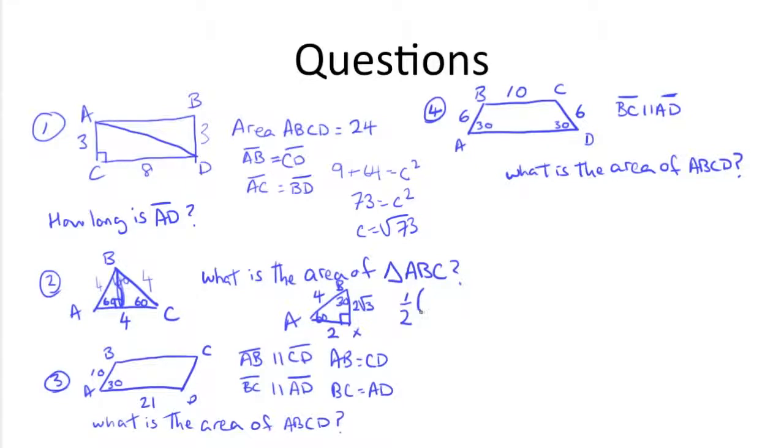So 1 half base, which is 4, times the height, which is 2 root 3. These cancel out, so we're left with 2 times 2 root 3, which is equal to 4 root 3.